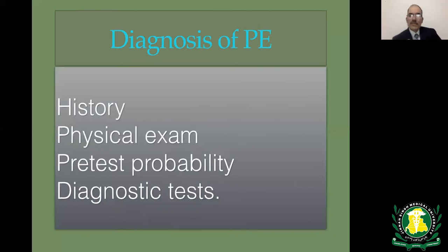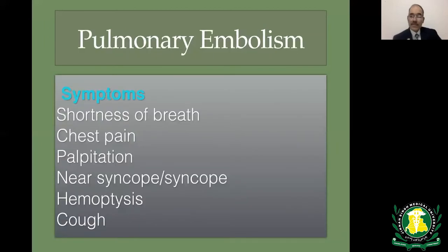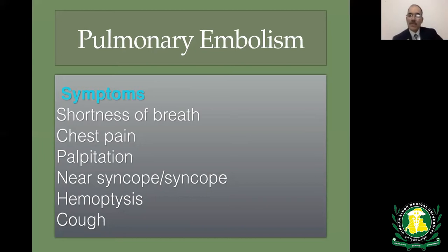The diagnosis of pulmonary embolism, like any other disease, depends on history, physical examination, pre-test probability, and diagnostic testing. The history varies from person to person because it depends on pre-existing cardiopulmonary status and clot burden. A person with normal lung and cardiac function may be relatively asymptomatic with a smaller PE, while someone with impaired cardiovascular function may develop many symptoms.